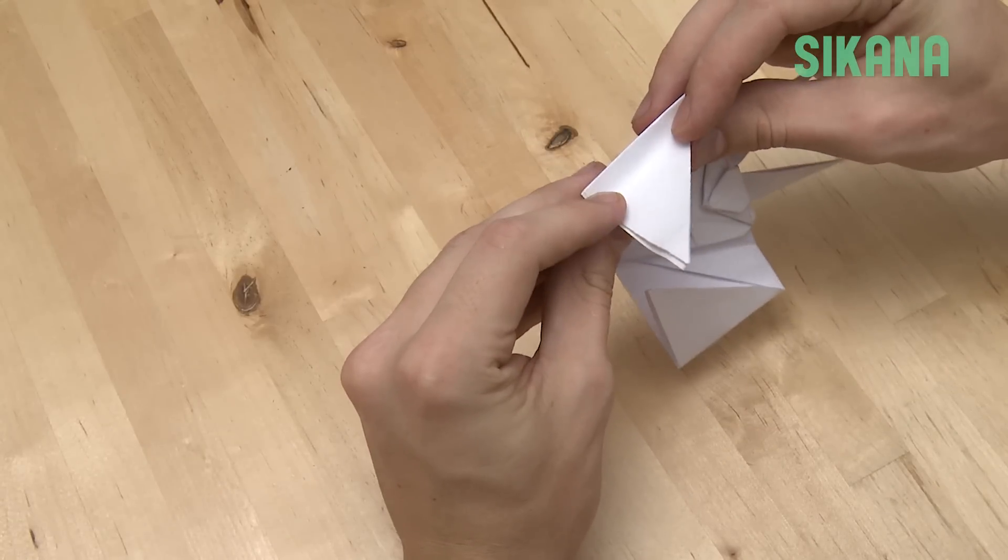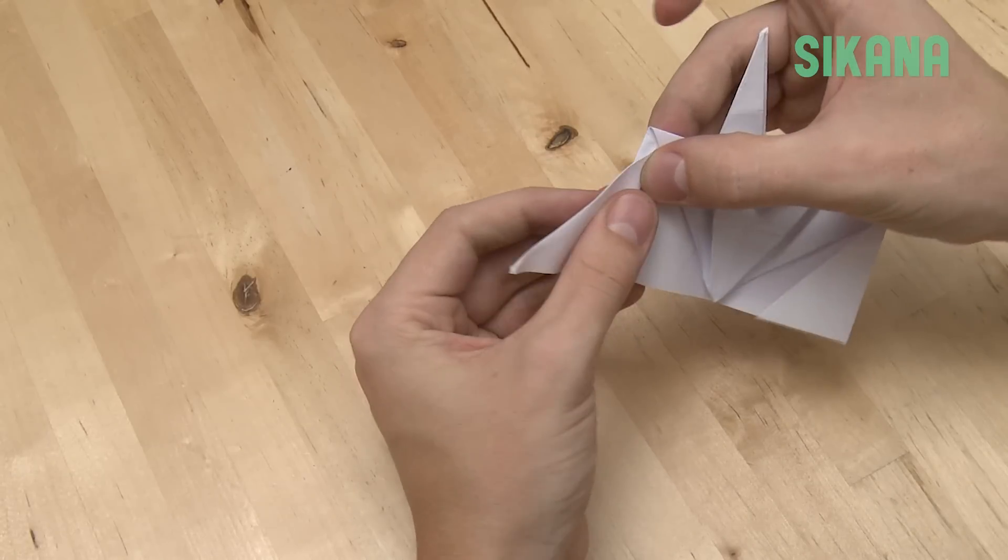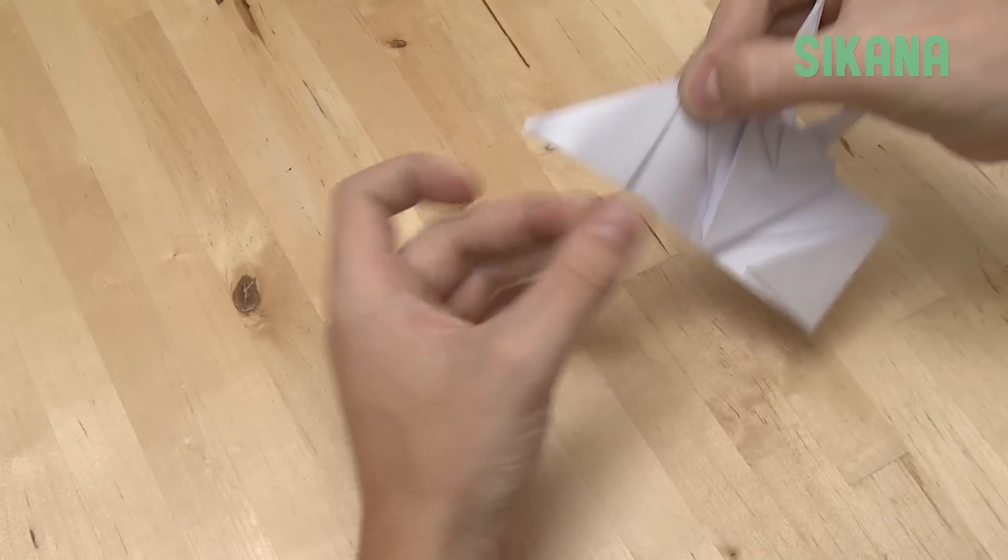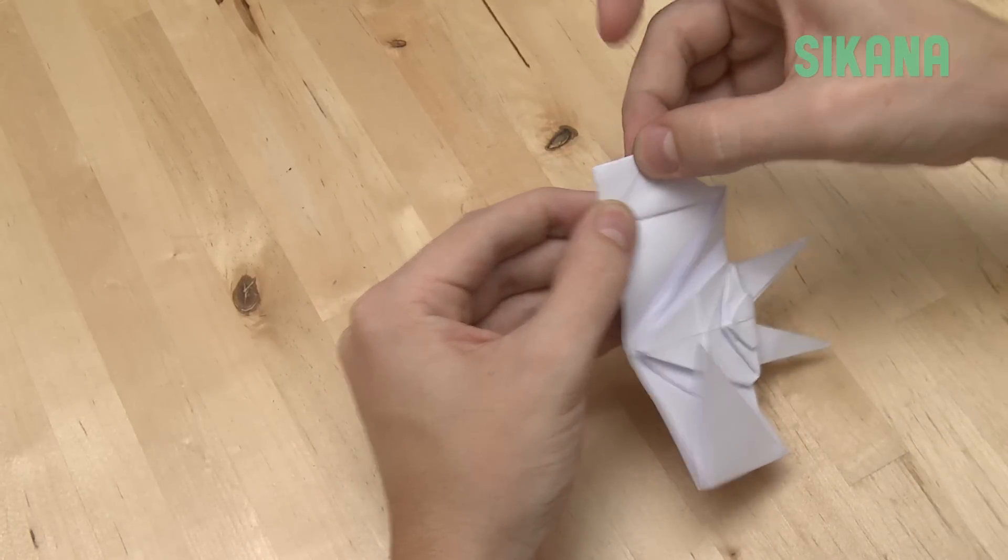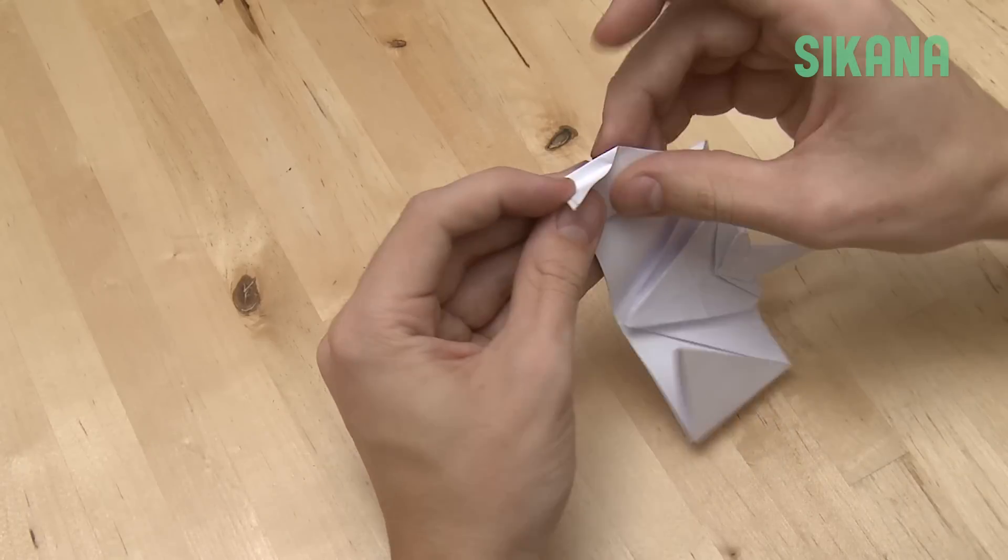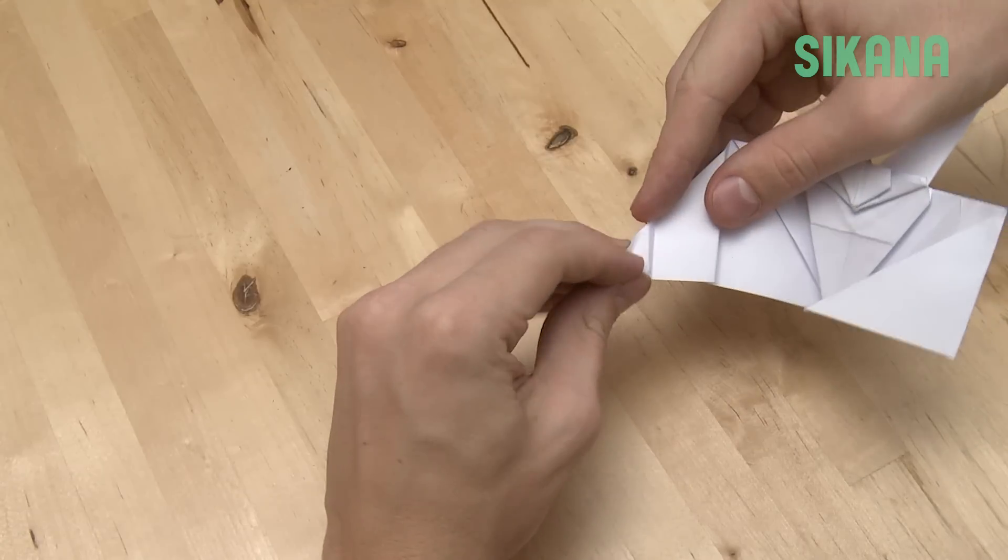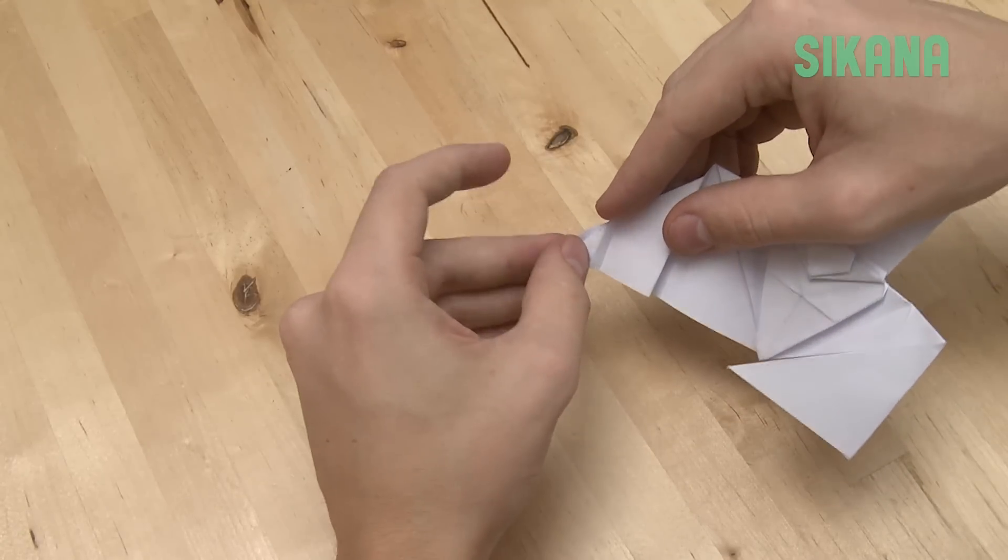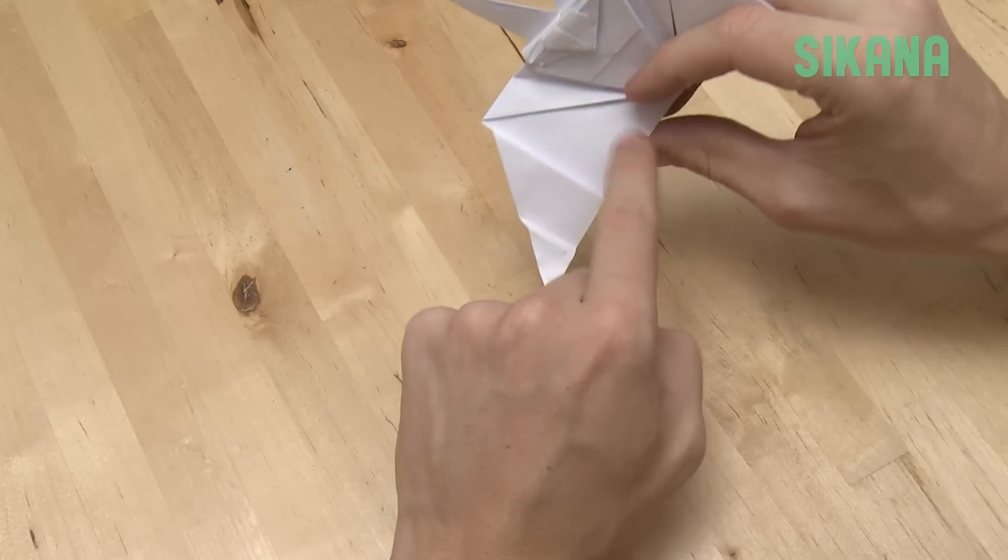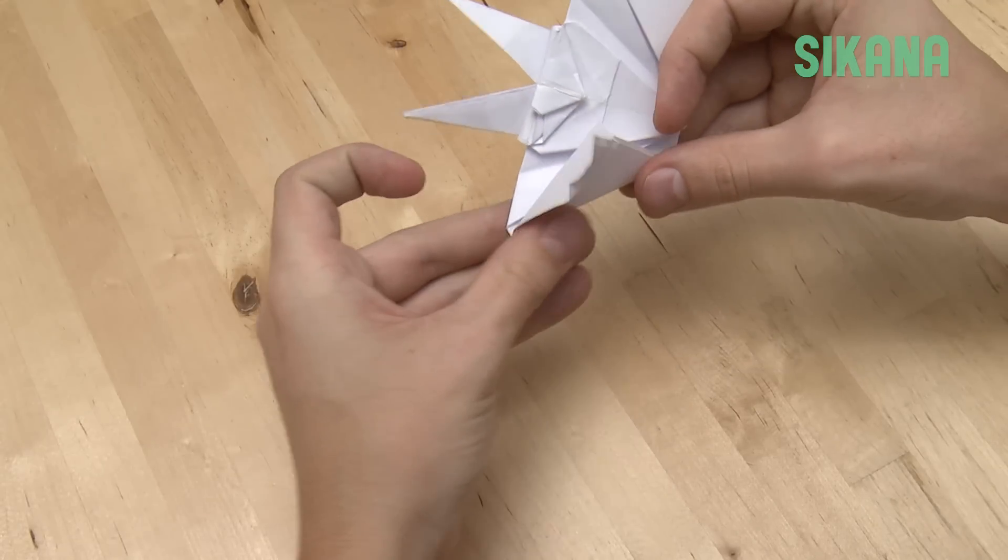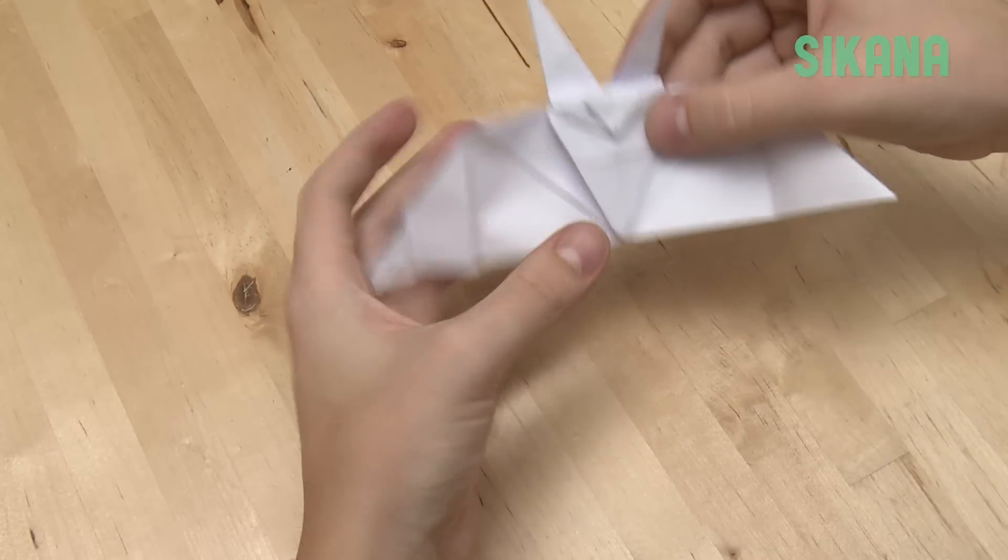Make a small accordion fold here, leaving a small space. Then fold the tip like this. Fold it in the opposite direction, leaving a small space. Fold a little here to curve the wing. Then make a hollow here. You have finished your first wing.